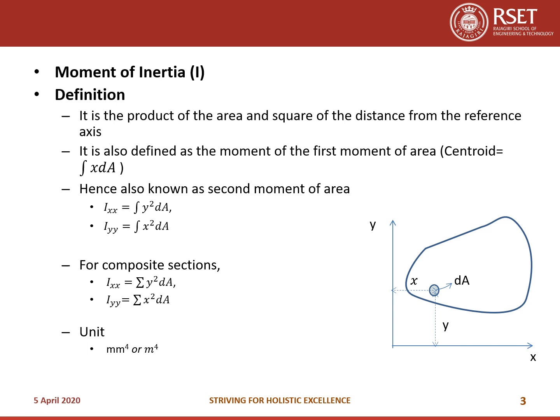For a composite section made of standard figures, we can simply add up the Moment of Inertia of each figure separately, written as summation y²·dA for Ixx and summation x²·dA for Iyy. The unit of Moment of Inertia is millimeter raised to 4 or meter raised to 4 in SI units, because y² is in m² and dA is also in m², giving m⁴.